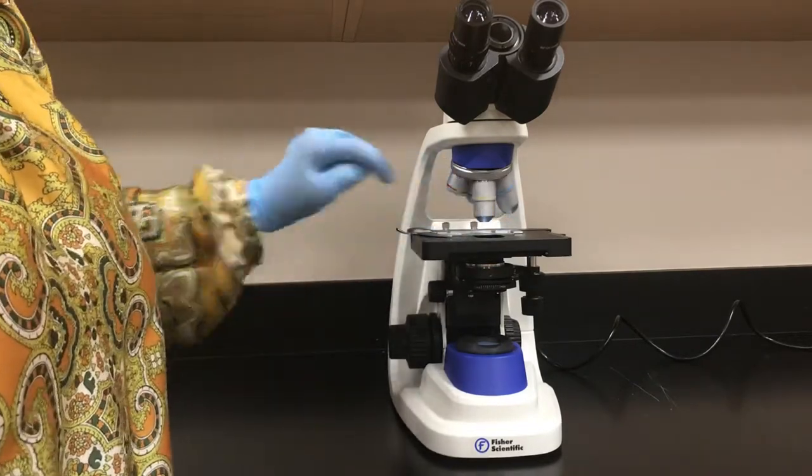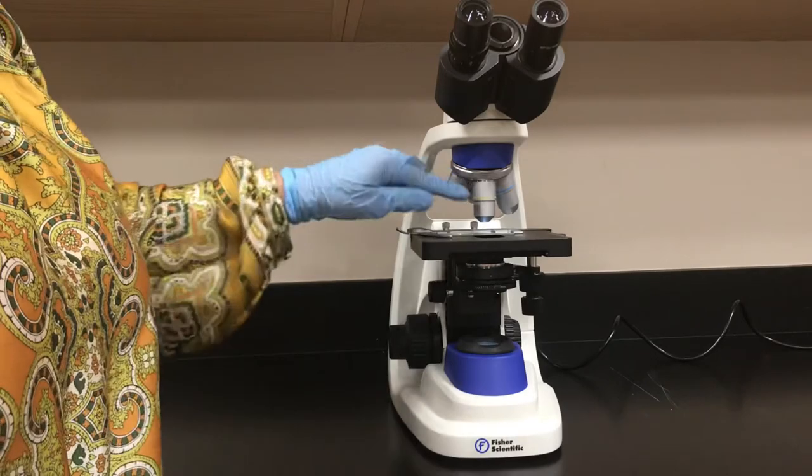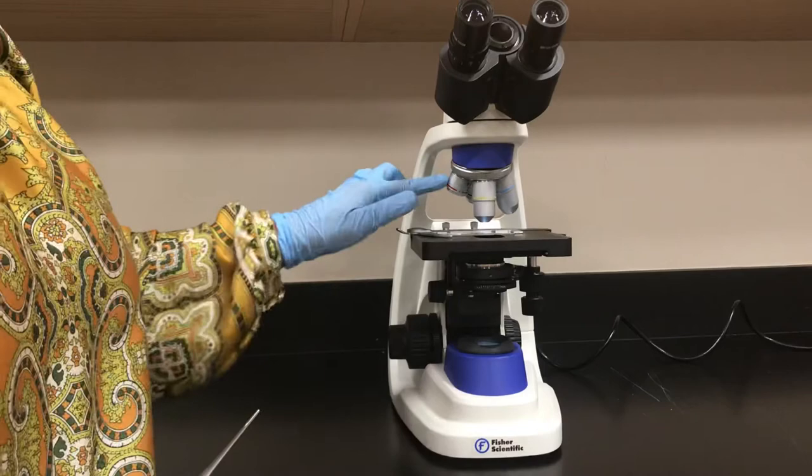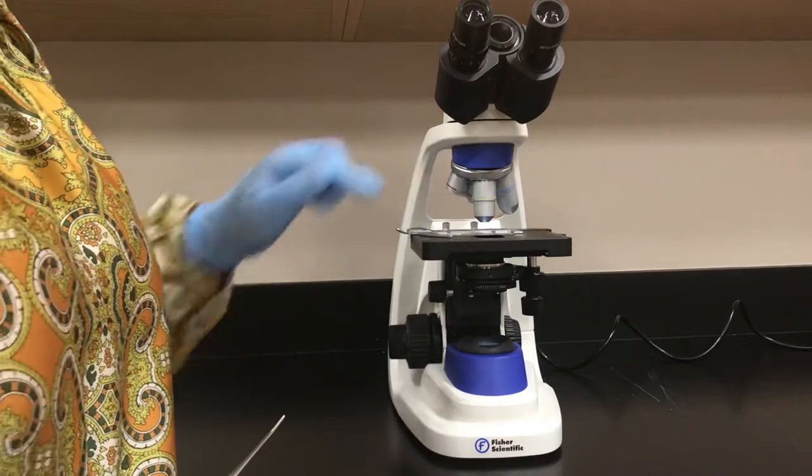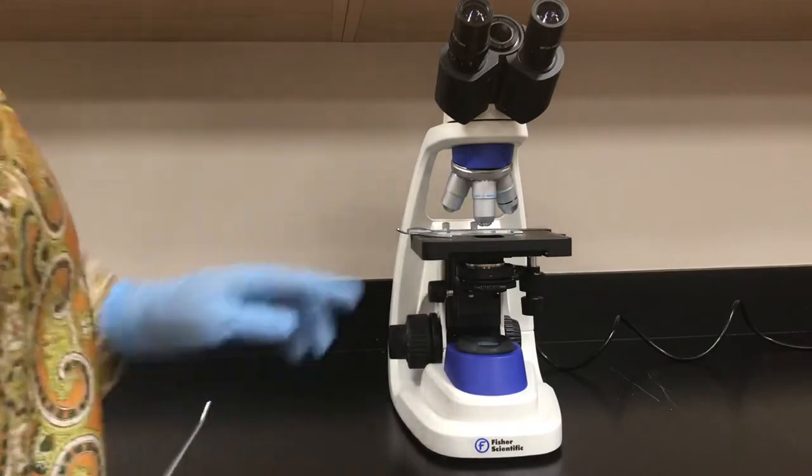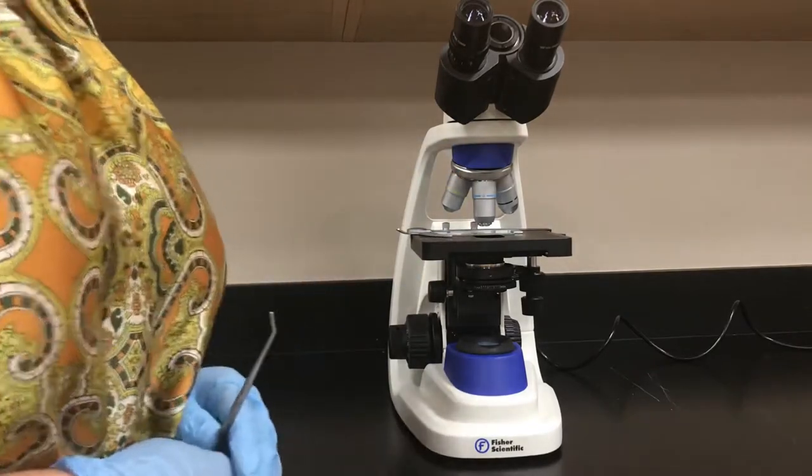The yellow color coded objective we call low power magnification. It magnifies 10 times. Red color coded is 4 times, yellow one is 10 times. When you turn to the blue one, the blue color coded high power objective magnifies 40 times.